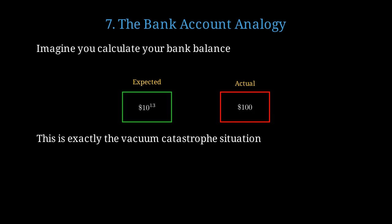This is exactly what's happening with vacuum energy. Our theory says there should be an enormous amount, but we only observe a tiny amount. Something must be canceling out almost all the predicted vacuum energy. But we have no idea what that something is, or why the cancellation is so precise.